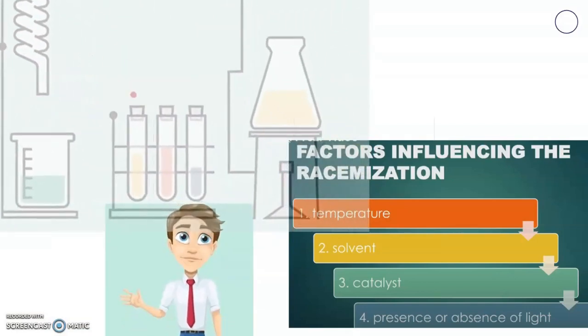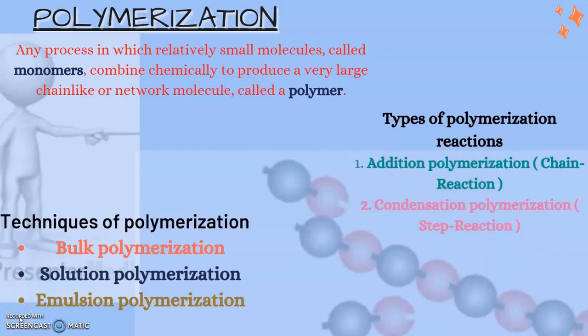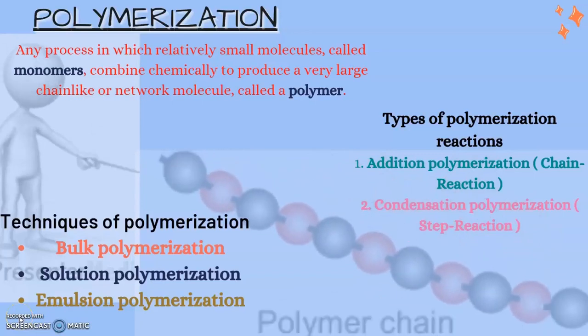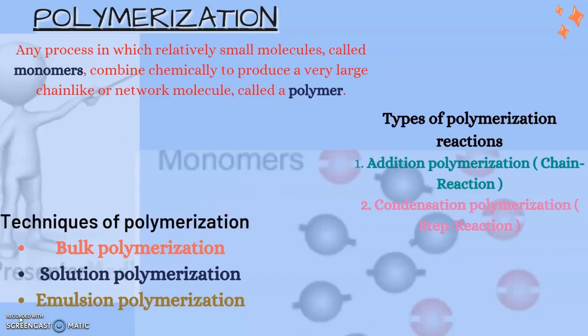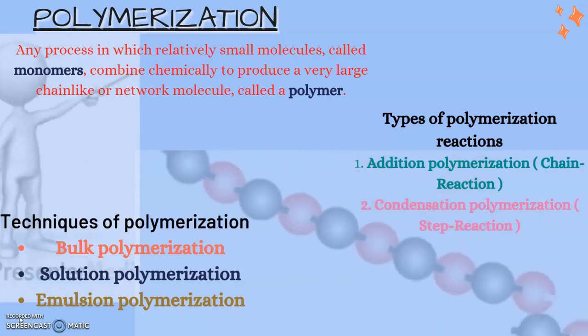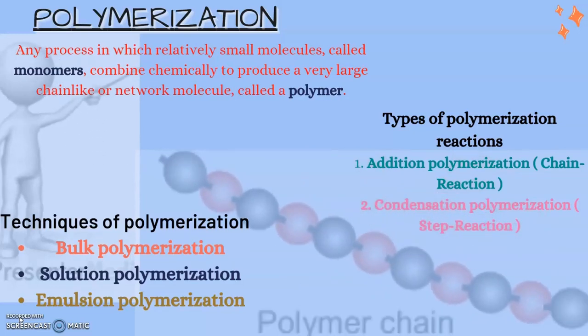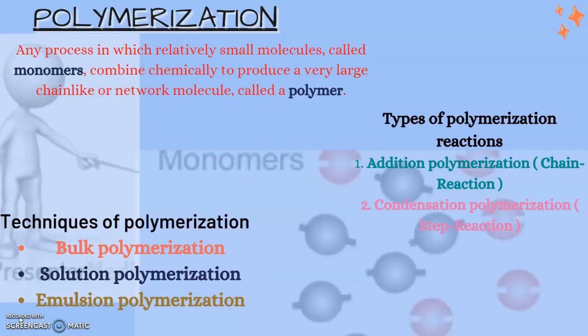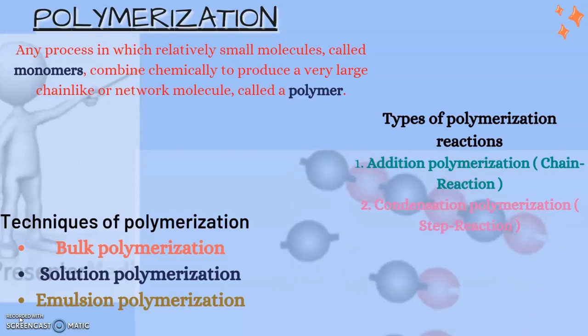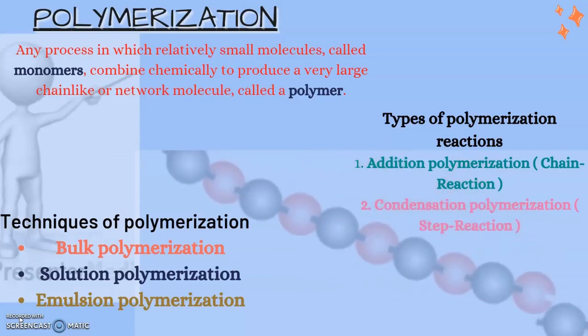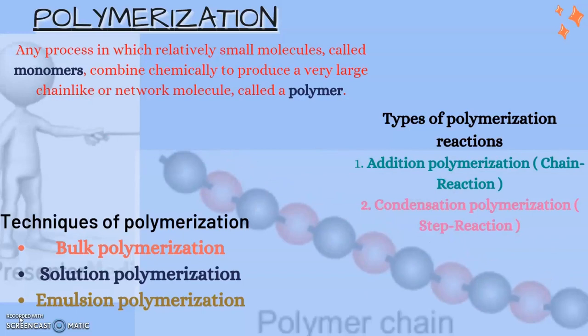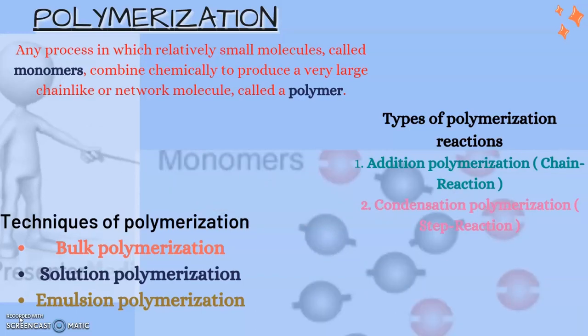The last chemical property we have in pre-formulation studies is polymerization. Any process in which relatively small molecules called monomers combine chemically to produce a very large chain-like or network molecule called a polymer. Types of polymerization reactions are addition polymerization (also known as chain reaction) and condensation polymerization (also known as step reaction). The techniques of polymerization are bulk polymerization, solution polymerization and emulsion polymerization.